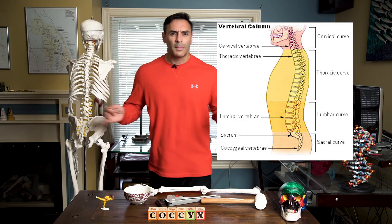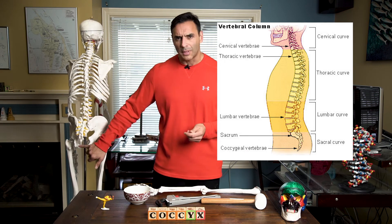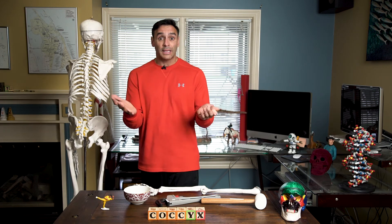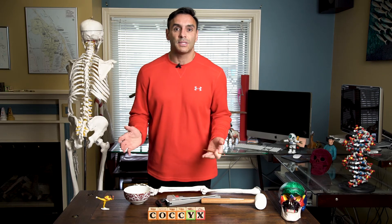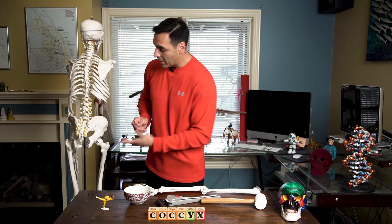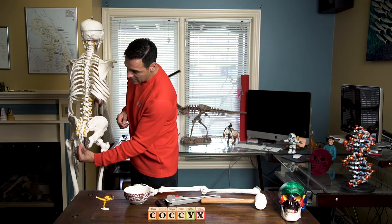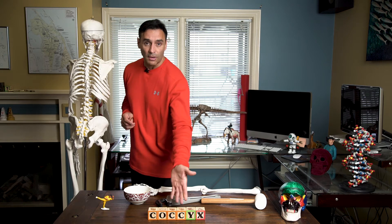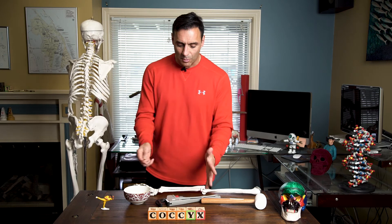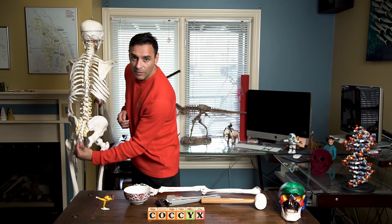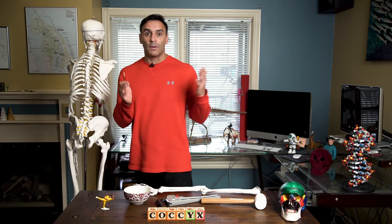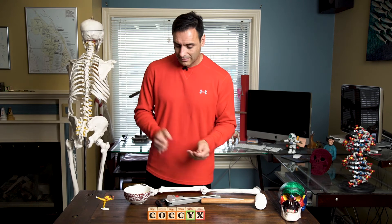In a dog, the tail vertebrae are not actually fused. And if you looked at a dinosaur with a long tail, they would have a lot of these vertebrae — called coccygeal vertebrae. But 'coccyx' is the name for this structure in people: the tailbone.